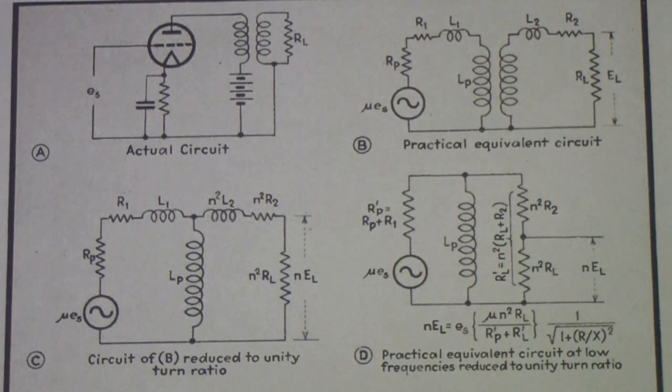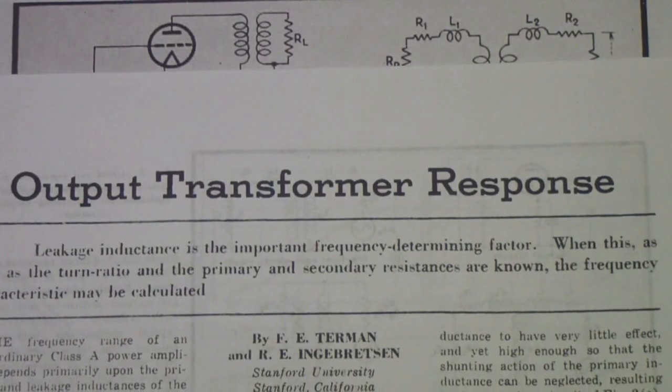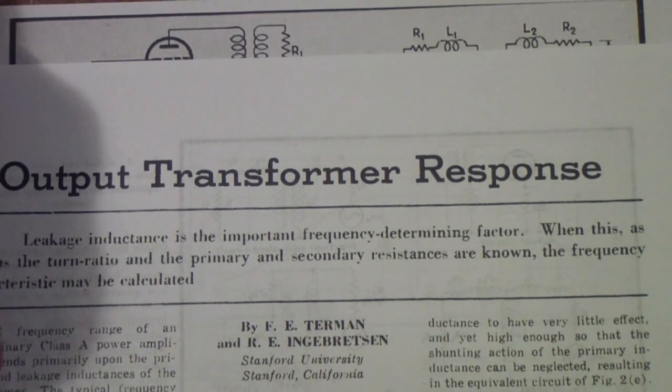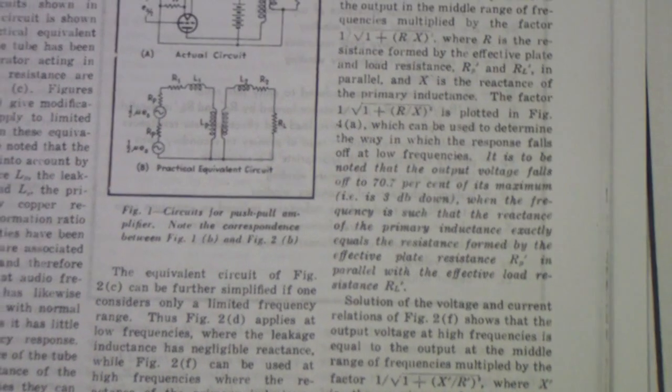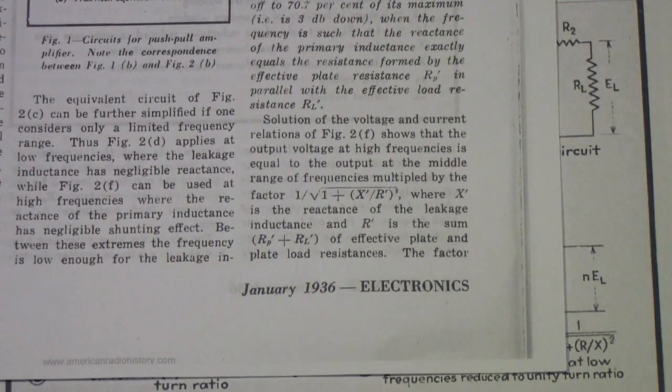All I remembered was that it was authored by Frederick Emmons Terman, the former dean of the engineering school at Stanford, who was a very famous electrical engineer back in the 40s and 50s and 60s. The specific article is called Output Transformer Response, and it appears in the January 1936 edition of Electronics Magazine.